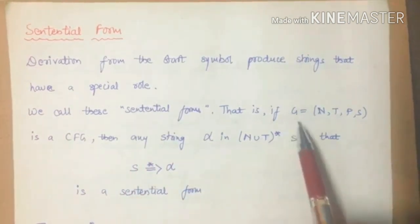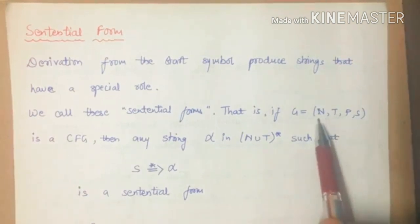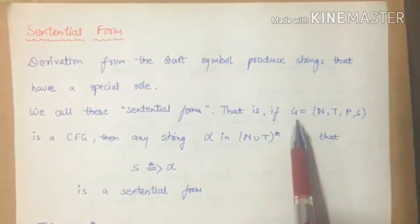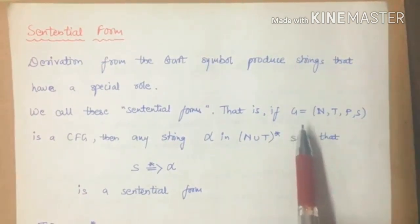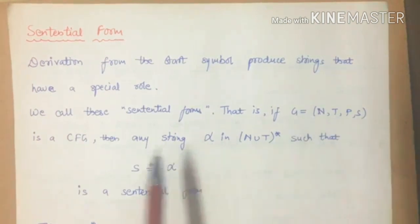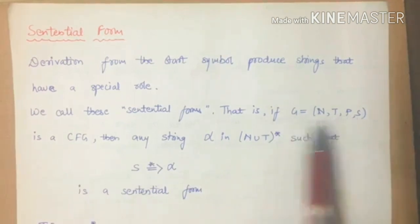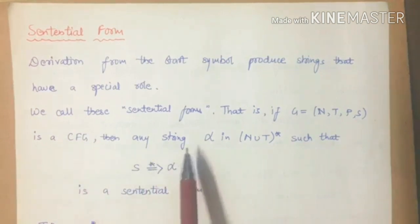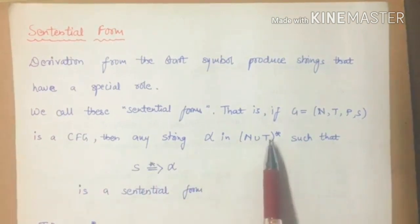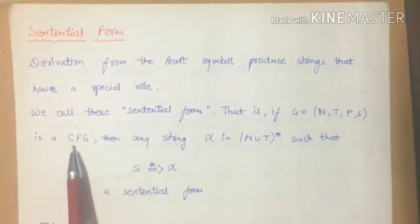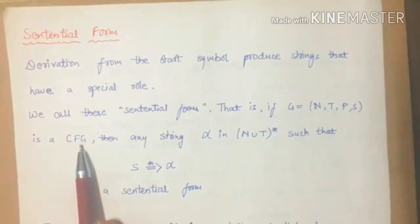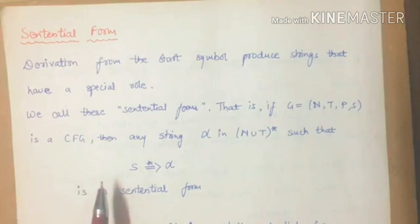For example, we have a grammar G equal to N, T, P, S — non-terminal, production rule, and start symbol. If you haven't seen the previous lectures, please see them, where I have explained what a grammar is and we defined the four-tuple. Grammar is a context-free grammar. Our type 2 grammar is context-free grammar, and we have explained the rules in type 2 grammar.